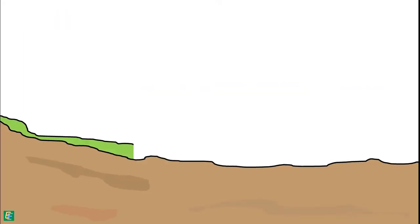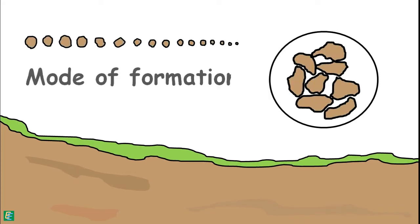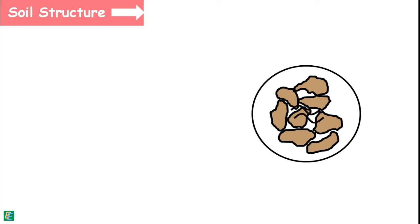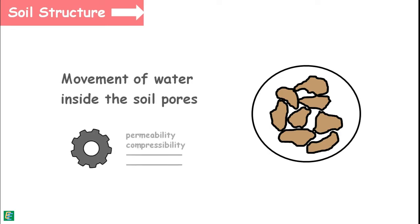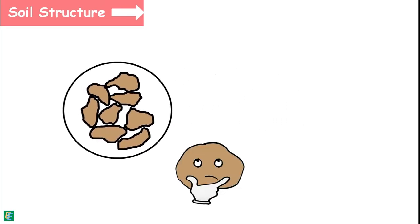The soils we see in nature can be deposited having different structures depending upon their constituting particle size and their mode of formation. Soil structure is the geometrical arrangement of the solid parts of the soil — the soil particles — with respect to one another. Soil structure significantly influences the movement of air and water in the soil, which affects the engineering properties of the soil. Therefore, it is important for us to understand the structure of soil deposits.